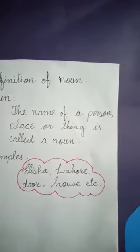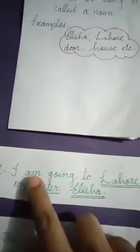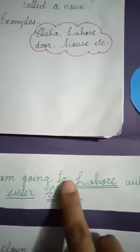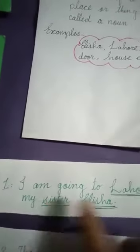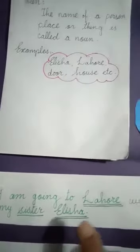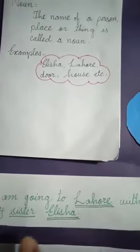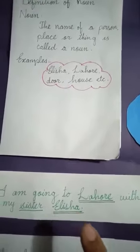To make it more clear, I will give you more examples. Number 1: I am going to Lahore with my sister Alicia. Here you see Lahore, sister, Alicia are nouns.